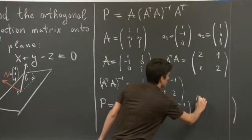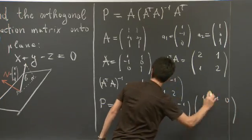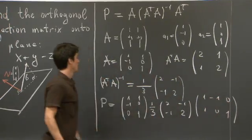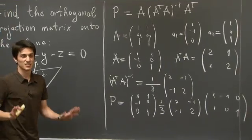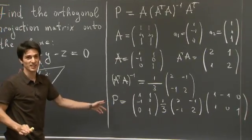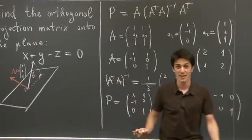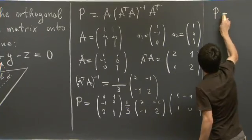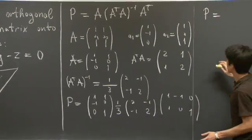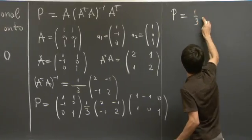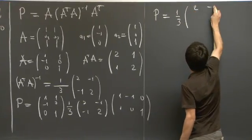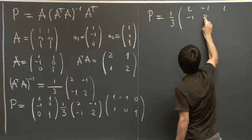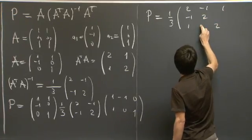A-transpose is 1, -1, 0 on the first row and 1, 0, 1 on the second row. I'm going to carry out this multiplication in a humanly fast fashion, and just write down the answer, which is (1/3) times the matrix: 2, -1, 1, -1, 2, 2, 1, 1, 1... Wait, let me be precise: the result is (1/3) times [2, -1, 1; -1, 2, 1; 1, 1, 2].